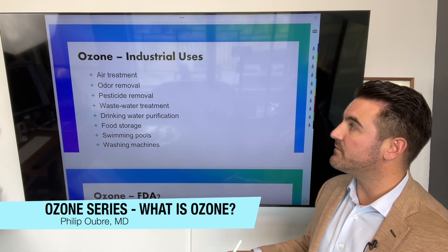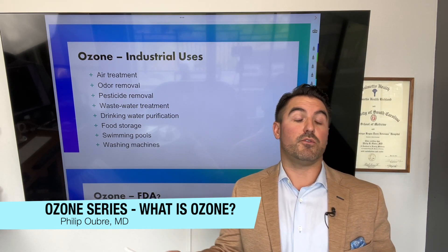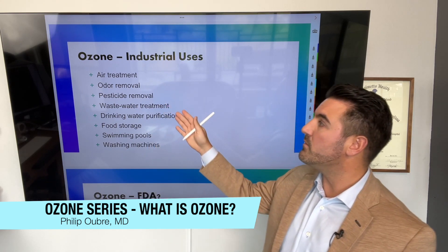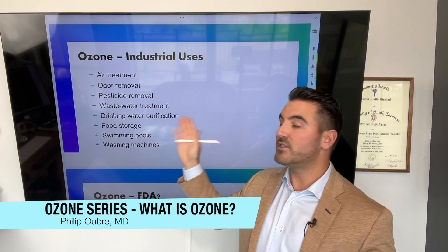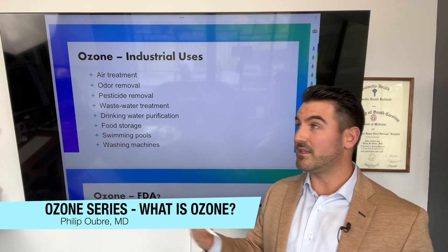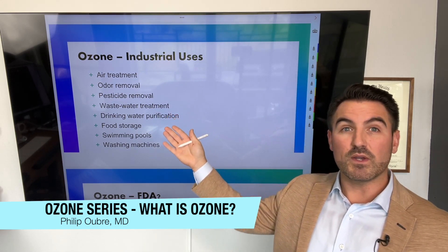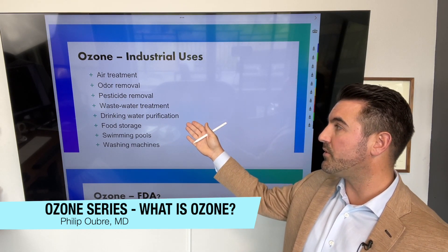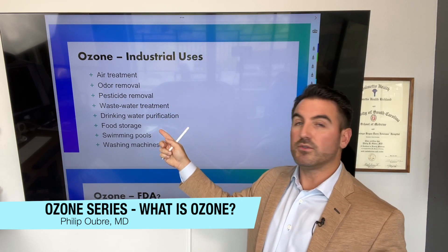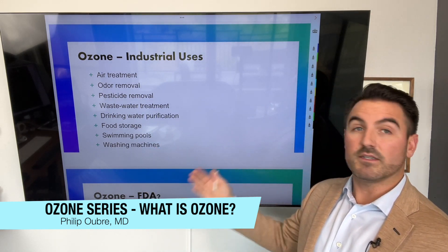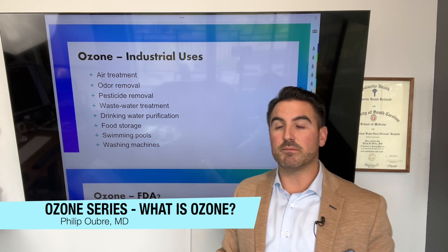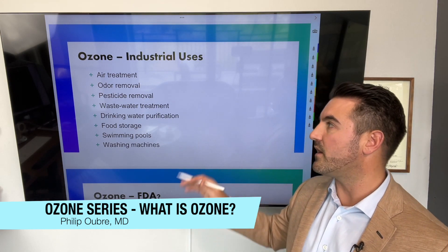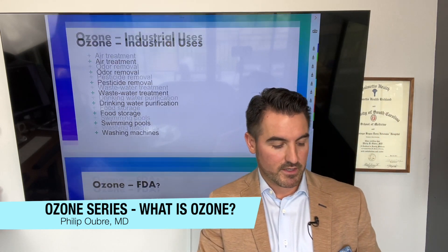What are some of the industrial uses of ozone? Whether you know it or not, it's being used all the time. It's frequently used in air treatment like odor removal or pesticide removal. It's used in wastewater treatment plants because it's a disinfectant that kills nearly anything — parasites, bacteria, anything in the water. It's also used in drinking water purification, food storage, swimming pools, and even washing machines. This is more on the industrial side of things — not something you'd see in your own home, but it's happening in the environment.